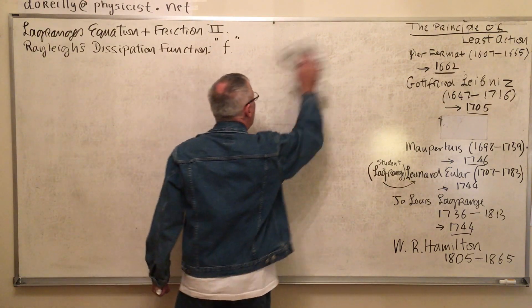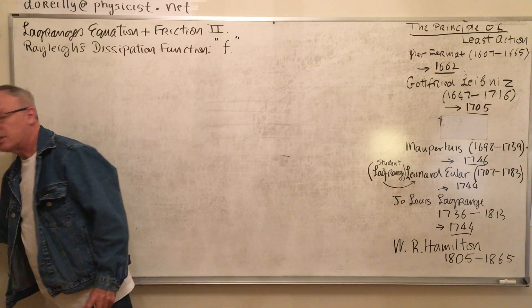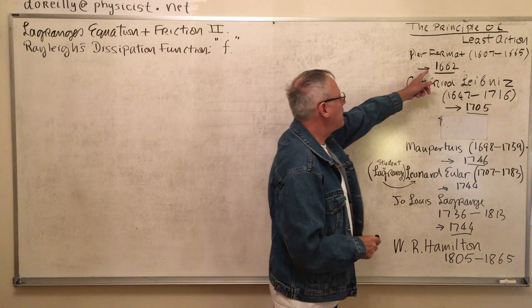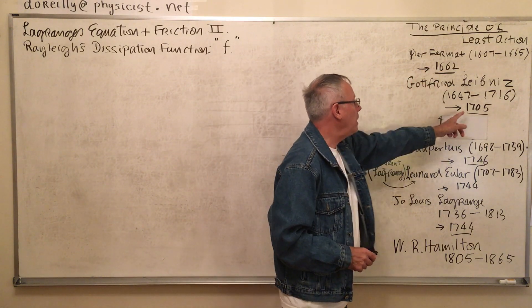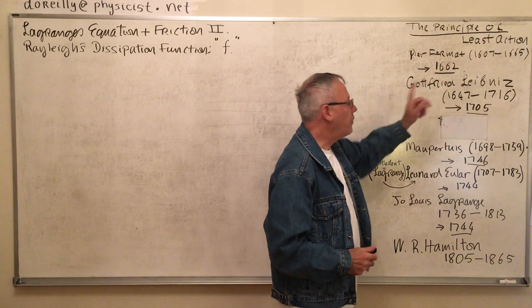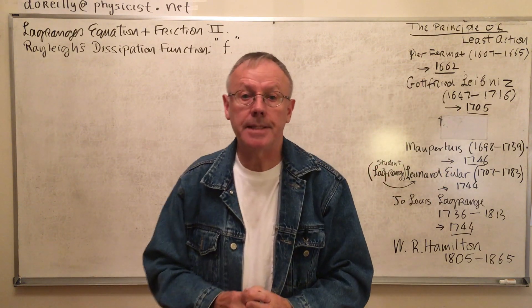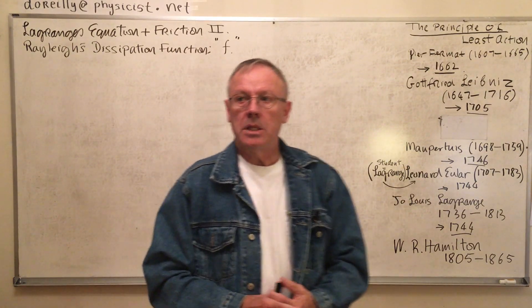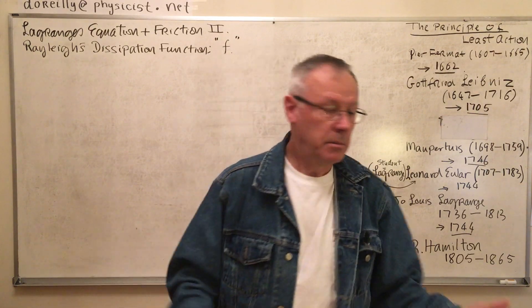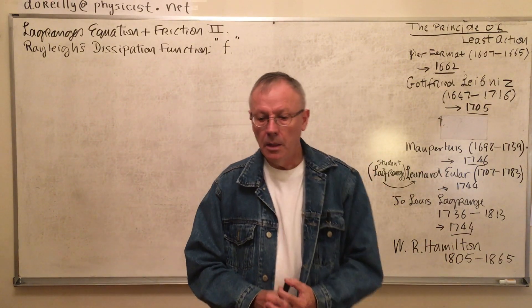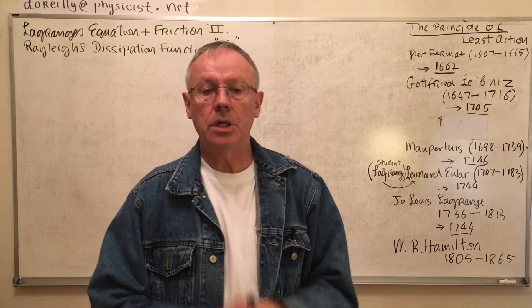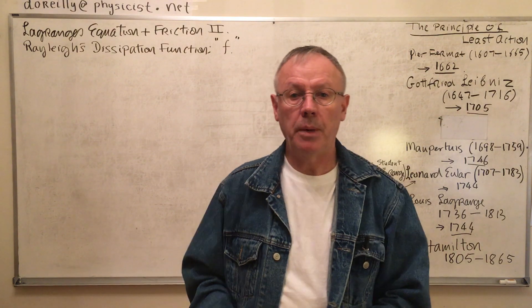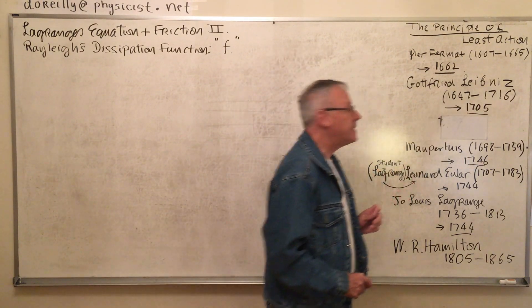Now, that can be reformulated in a modern way and it's a long story. Someday I might do a whole talk on that. Okay, so Fermat did this in 1662. In 1705, about 40 years later, Gottfried Leibniz did a mechanics version of the same thing. He did it before all these other guys down here. And about 40 years before the big flurry of activity. And Leibniz does not get the proper recognition for his invention of calculus. He's overshadowed by Newton. Well, he lived between 1647 and 1716.